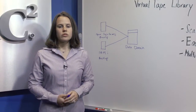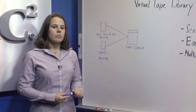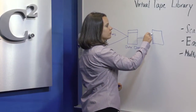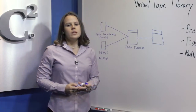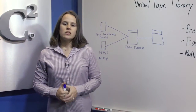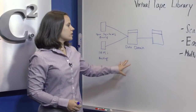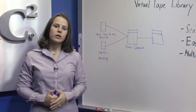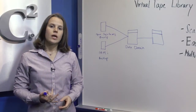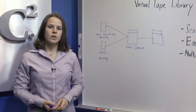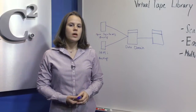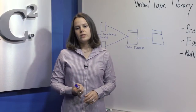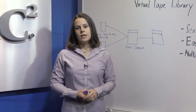Using EMC Data Domain Replicator software, virtual tape cartridges can be replicated over the network to a remote site. With DD Duplication technology, the amount of data transferred is reduced by up to 99% to a size where network-efficient replication is economically and operationally feasible. Using minimal bandwidth and with significant savings over other replication methods, you can have a cost-effective DR solution for all of your SAN data.